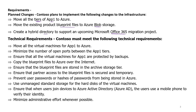In technical requirements, Contoso must: move all virtual machines for F1 to Azure; minimize the number of open ports between F1 tiers; ensure all virtual machines for F1 are protected by backups; copy blueprint files to Azure over the internet; ensure blueprint files are stored in the archive storage tier; ensure partner access to blueprint files is secure and temporary; prevent user passwords or hashes from being stored in Azure; use managed standard storage for VM hard disks; and ensure that when users join devices to Azure Active Directory, they use a mobile phone to verify their identity. Minimize administrative effort whenever possible.